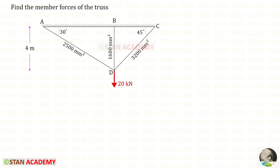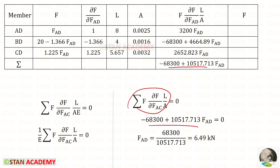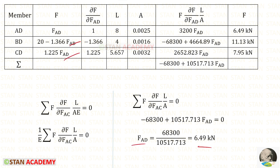Let us do one more numerical. In this one, the area of all members is given. In the table we have to add one more column for the area values. Then we find the products and add the three results. Young's modulus is not given, so we assume it is common for all members and take 1/E outside. 0 into E equals 0. Finally, for FAD we will get 6.49 kN. We got a positive value, meaning it is tensile. Applying FAD, we get the member forces in BD and CD — all three are positive, meaning all three are tensile.